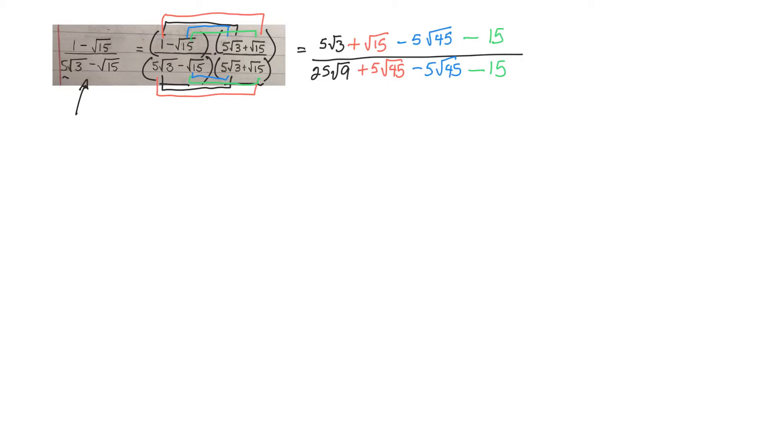I think I'm feeling fairly confident with my foiling. Now let's simplify. So this top one, 5 root 3, there's no other root 3s, plus root 15, minus 5. Now 45 is the same thing as 9 times 5. So I could rewrite that as root 9 times root 5. And 15 I can't do anything with.